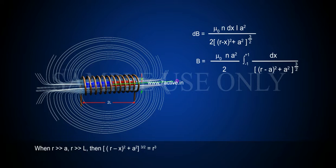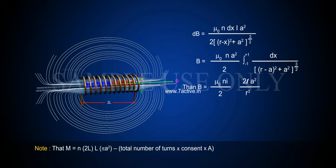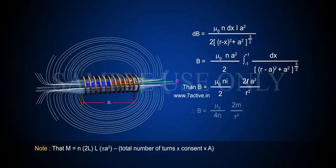Where r is much greater than a and r is much greater than l, then (r − x)² + a²]^(3/2) ≈ r³. Then B = (μ₀ n i / 2) × (2l a²/ r³). Note that n = N / 2l, so nl · πa² gives the total number of turns times the area. Therefore B = (μ₀ / 4π) × (2m / r³).